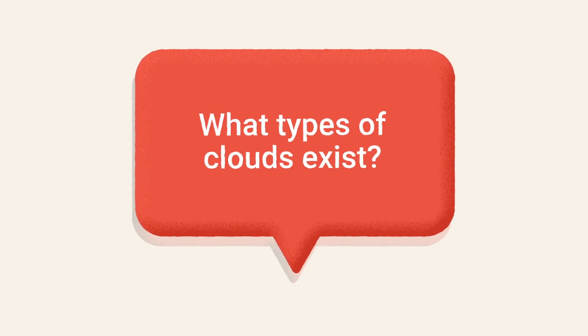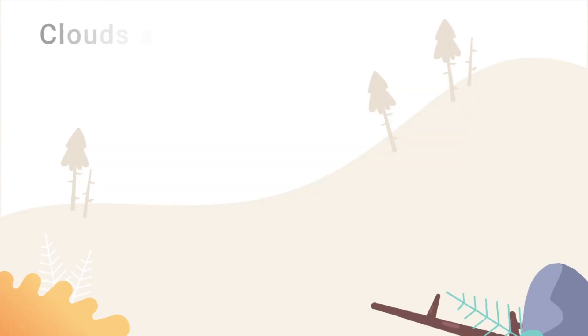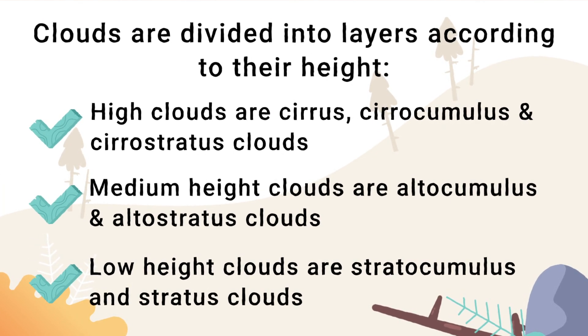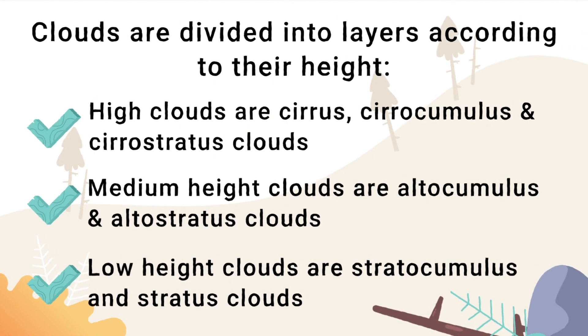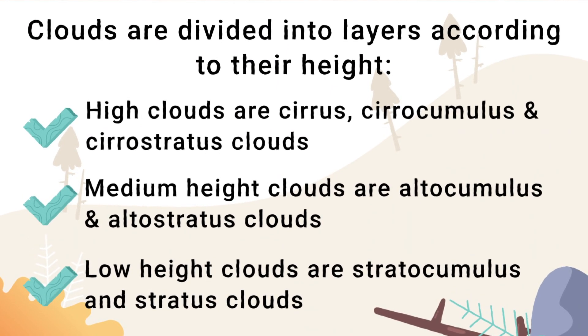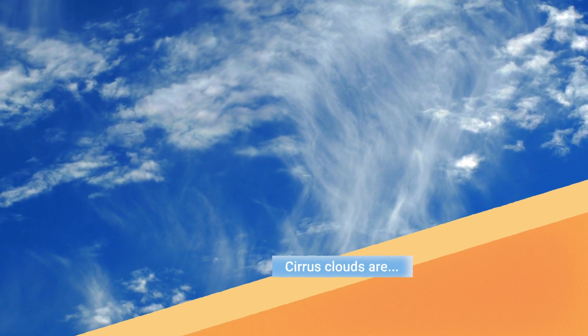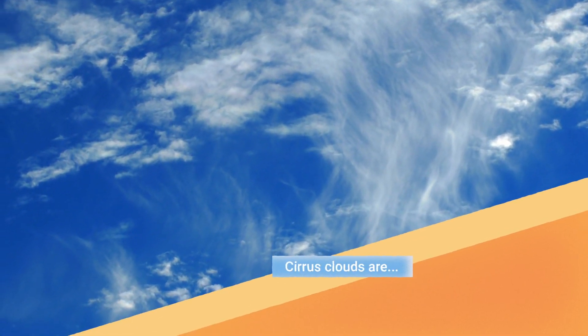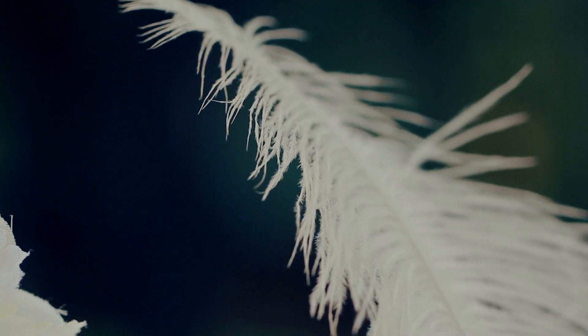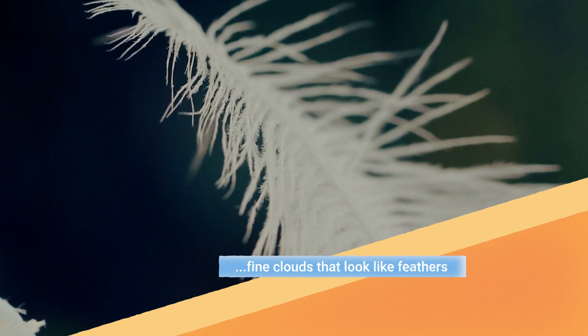But what types of clouds exist? Clouds are divided into layers according to their height. High clouds are cirrus and cirro clouds. Medium height clouds are alto clouds. Low height clouds are strato and stratus clouds. Cirrus clouds are fine clouds that look like feathers.